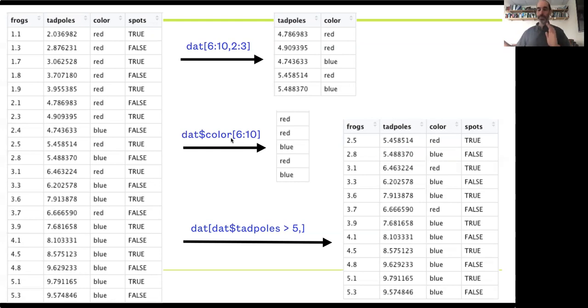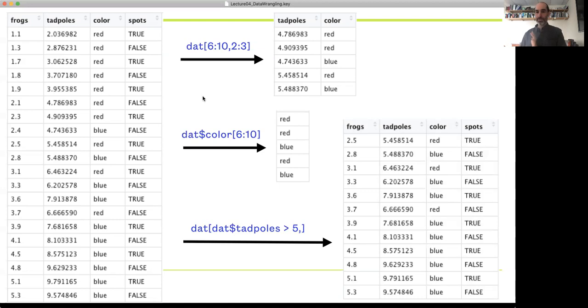I can also refer to them by name instead of by number. So we saw that we can do that with the dollar sign referencing within a data frame or list, but we can also do this within the square bracket.